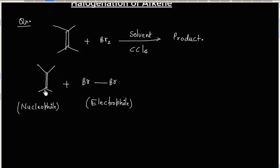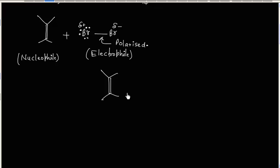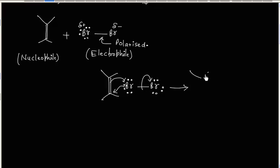When bromine comes closer to the alkene, the bromine-bromine bond becomes polarized. One bromine atom develops a negative charge and the other develops a positive charge. The double bond attacks on bromine, and at the same time this lone pair attacks on the alkene while Br⁻ leaves.